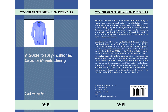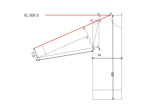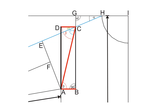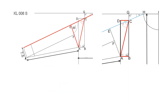For more detailed information, you may go through my book on fully fashioned sweater manufacturing — A Guide to Fully Fashioned Sweater Manufacturing, published by Woodhead Publishing India Private Limited. The book is available in leading bookstores in almost all the countries around the world, and it is also available on Amazon. Today I present Video Part 1 on Sweater Geometry. As this topic cannot be covered in one video, it may take 3 to 4 videos to cover the subject, as I don't want to have a video that is longer than 10 to 12 minutes.